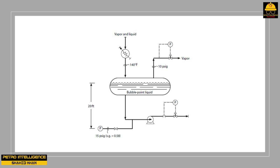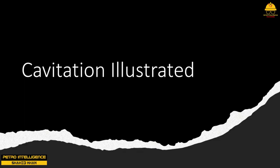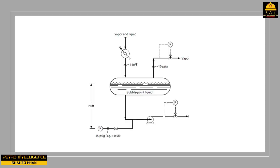When the required NPSH of a pump equals the NPSH available to the pump, the pump will cavitate or slip. To illustrate: the liquid in the vessel is presumed to be in equilibrium with the vapor leaving the drum, meaning the liquid is at its bubble point pressure and the vapor is at its dew point temperature. The vapor pressure of the liquid is 24.7 PSIA — 10 PSIG plus 14.7 PSIA of atmospheric pressure.